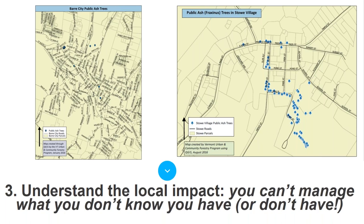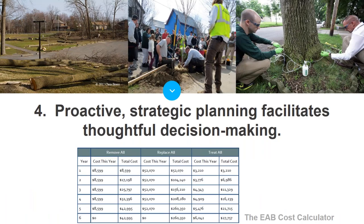Fourth, by planning and being proactive you can be strategic about the timeline for response and how costs are spread out over time. You can be thoughtful about managing your ash population rather than just reacting. For example, it may be more cost-effective to treat high-value ash trees in good condition with insecticide rather than simply removing them.